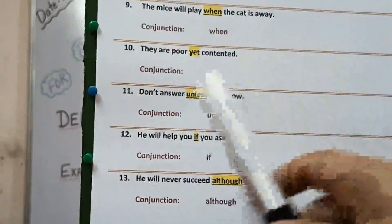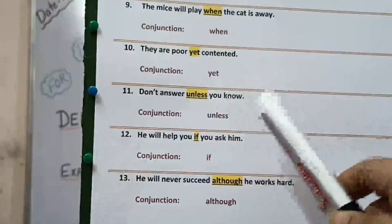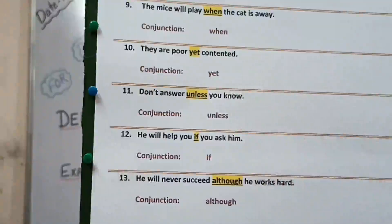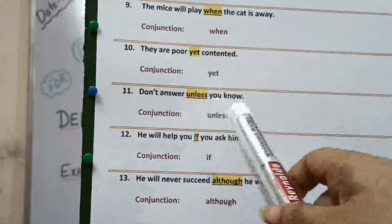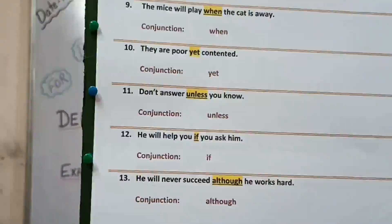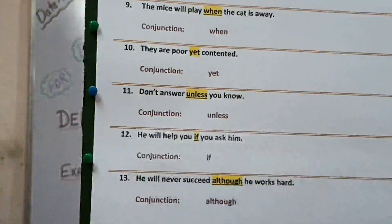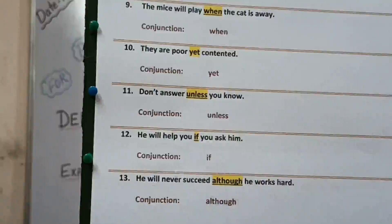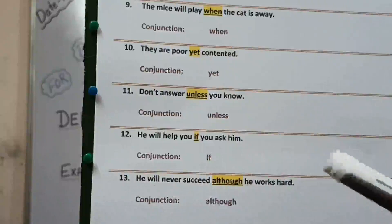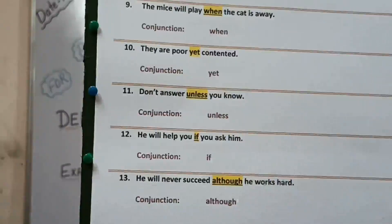Eleventh: don't answer unless you know. Here there is a condition, so the conjunction is 'unless'. Twelfth: he will help you if you ask him. There is a condition, so the conjunction is 'if'. Thirteenth: he will never succeed although he works hard. Here there is a condition despite of something he is doing, so the conjunction is 'although'.